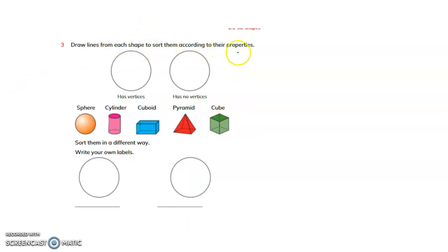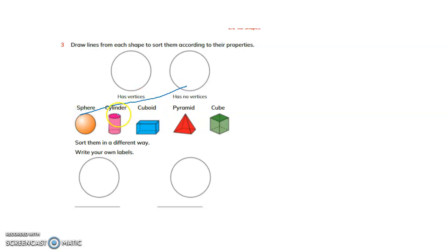Draw lines from each shape to sort them according to their properties. There are two circles: 'has vertices' and 'has no vertices.' A sphere has no vertices, so sphere goes here. A cylinder also does not have vertices, so it goes here. A cuboid has 8 vertices, so it goes under 'has vertices.' A pyramid has 5 vertices — 'has vertices.' A cube has 8 vertices — 'has vertices.' So: cuboid, square-based pyramid, and cube go under 'has vertices'; cylinder and sphere go under 'has no vertices.'